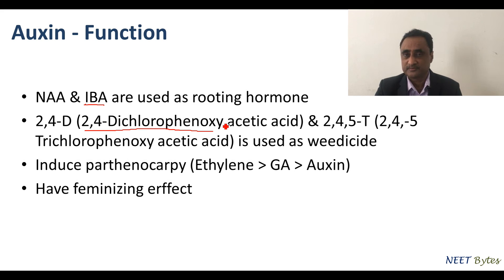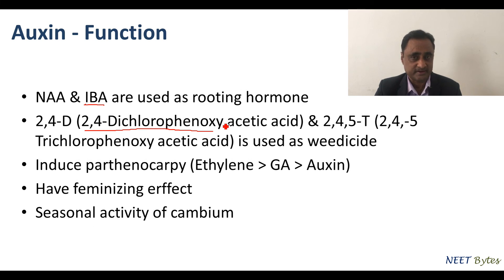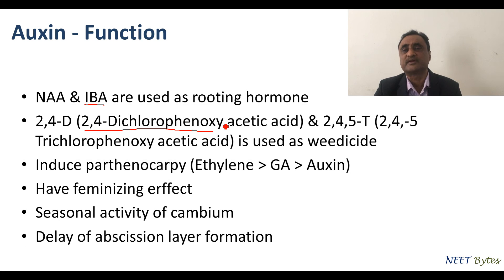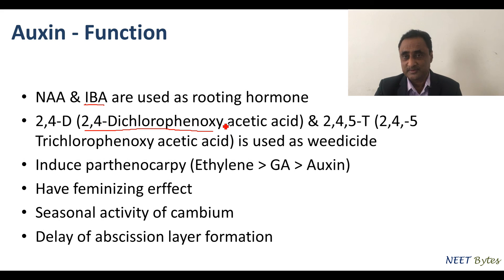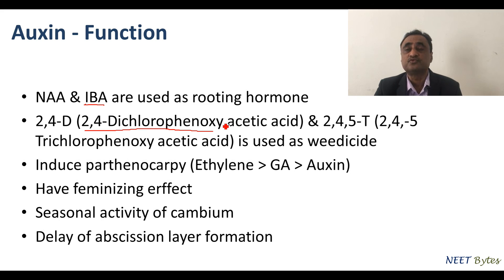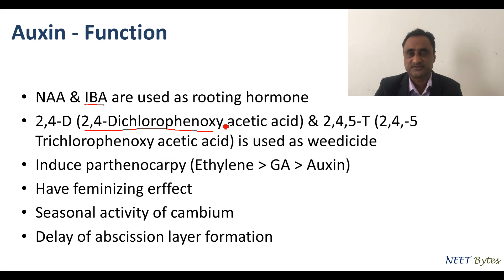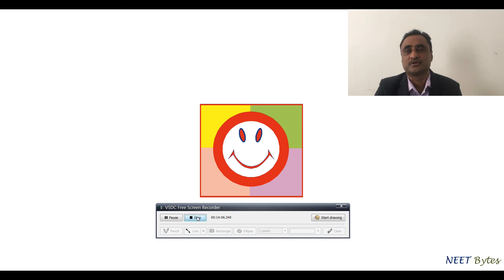Auxin has a feminizing effect — cytokinin, ethylene, and auxin all three have a feminizing effect. The only hormone that induces a male effect is gibberellin, which is why gibberellin is called the male hormone. Auxin also promotes the cambial activity during secondary growth. Finally, auxin delays the formation of the abscission layer, acting antagonistically to abscisic acid, which acts as an inhibitor.